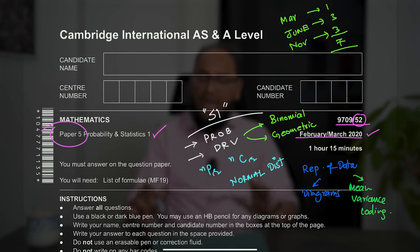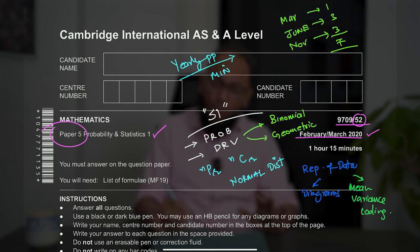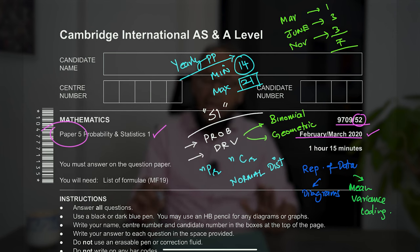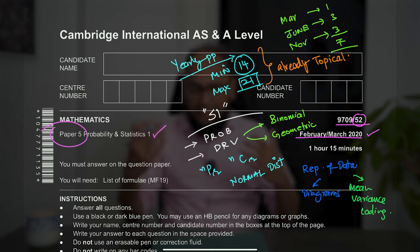Every single variant is worth practicing. When asked how many past papers to do, the minimum is 14 — that's two years of papers. There's no maximum, but solving 21 past papers is more than enough practice, provided you have already studied topical questions in detail from at least 10 years of past papers.